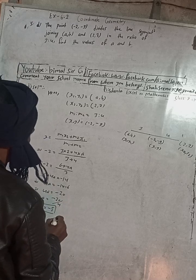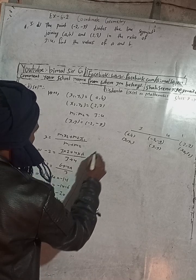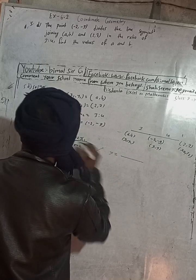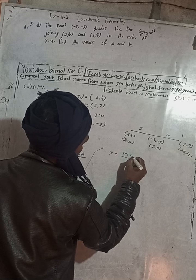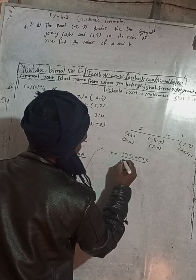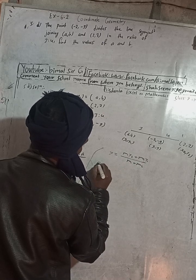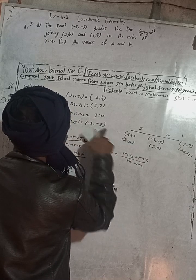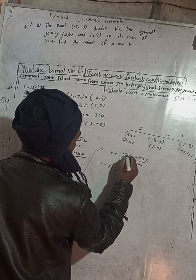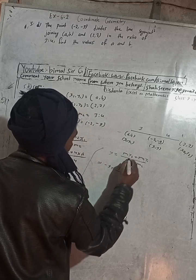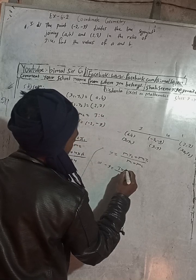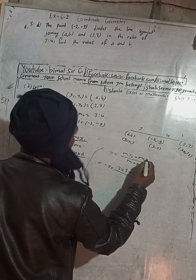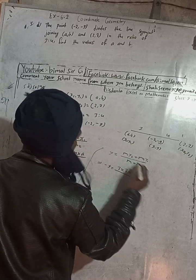Now in the same way, this y is equal to m1×y2 plus m2×y1 divided by m1 plus m2. The y value is -9, so -9 is equal to m1 is 3 into y2 is 7, plus m2 is 4 into y1 is b, divided by m1 plus m2, 3 plus 4.